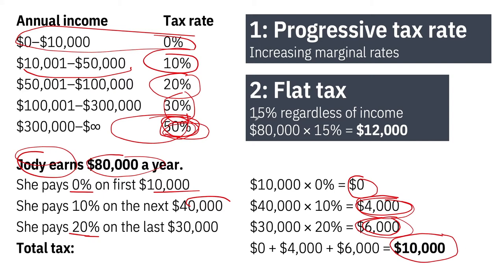A flat tax system imposes 15% on everybody regardless of income. So if Jody earns $80,000, she pays 15% on all of it — a tax bill of $12,000 instead of $10,000 — because it's no longer a marginal system increasing over time. Flat taxes end up being regressive, meaning they impose more of a burden on the poor than on the rich. It looks equitable because everybody pays the same rate, but the poorest pay a larger chunk of their income than the richest.